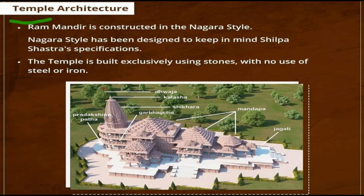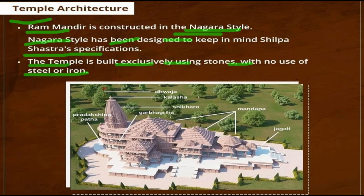Temple architecture — Ram Mandir is constructed in the Nagara style. The Nagara style has also been designed keeping in mind the Silpa Sastra specifications. The temple is built exclusively using stone, with no use of steel or iron.